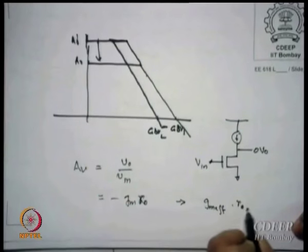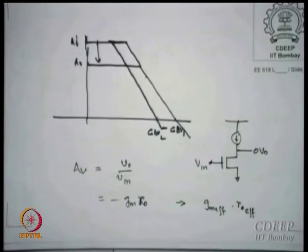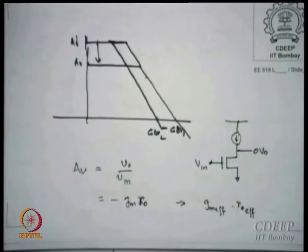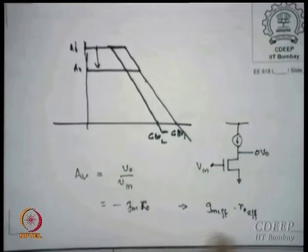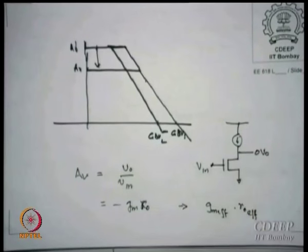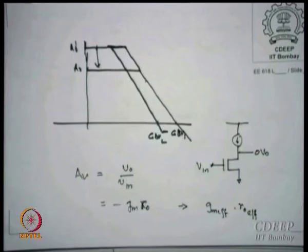Instead of just gm, for the cascode I say gm_effective times Ro_effective, and if I derive these two values for the cascode case, I still have gain = minus gm_effective × Ro_effective. This method is only to show comparisons — it may not always be used, but the actual solving of circuits is best done using Kirchhoff's laws. For any other amplifier you do not know, you can always put equivalent circuits.